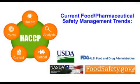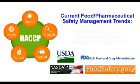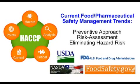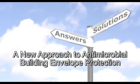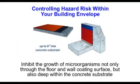Current food and pharmaceutical safety management trends, such as HACCP, suggest the preventive approach to eliminating potential hazard risk in food and drug processing environments. Simply put, this means that identifying and reducing potential hazards now can reduce or eliminate the risk of these hazards being realized in the future. So how does a manufacturer apply this approach to a processing environment's building envelope? The key is to inhibit the growth of hazardous microorganisms not only through the floor and wall coating surface, but also deep within the underlying concrete substrate.